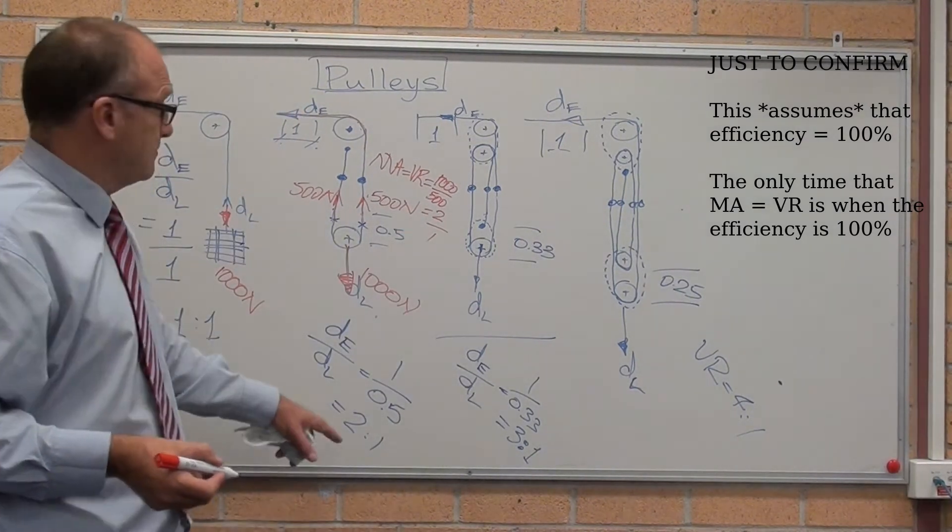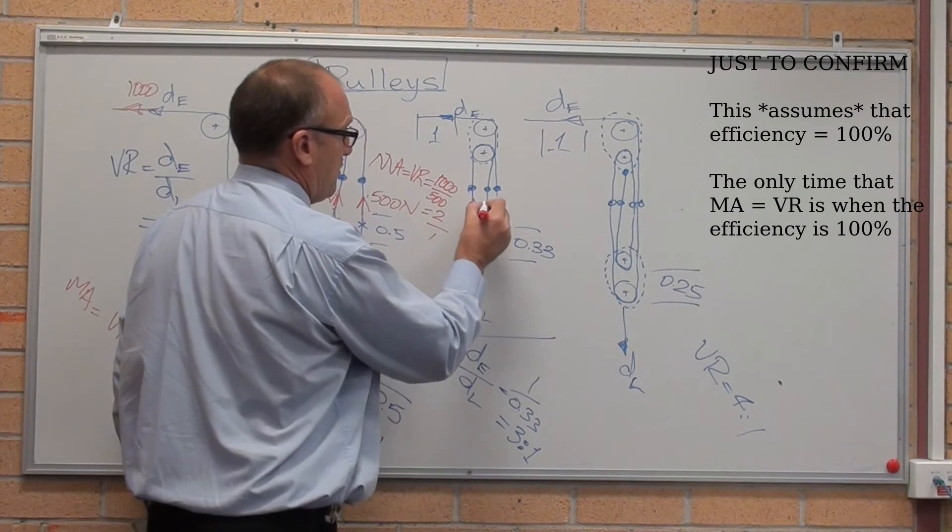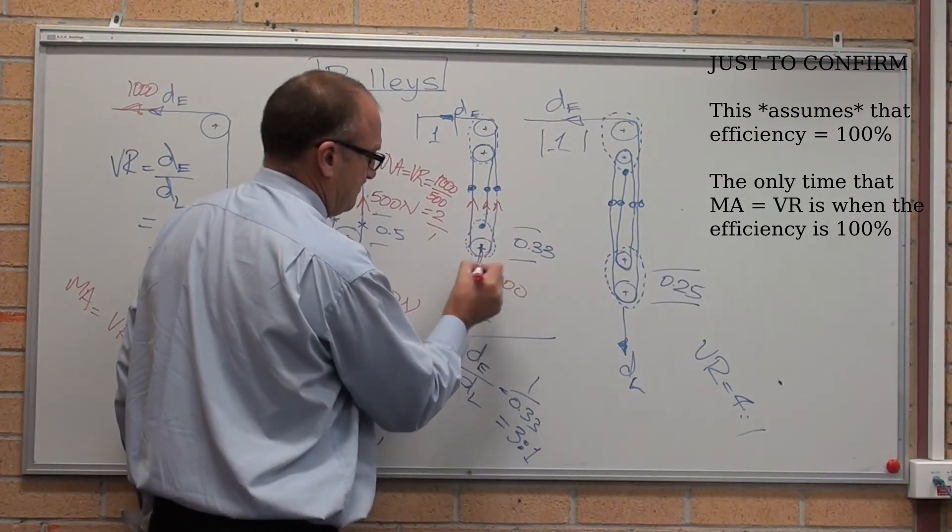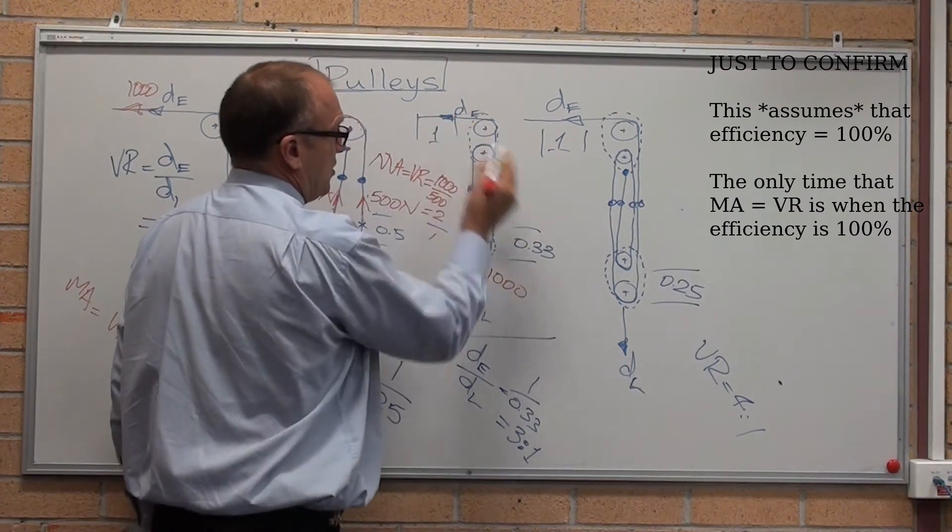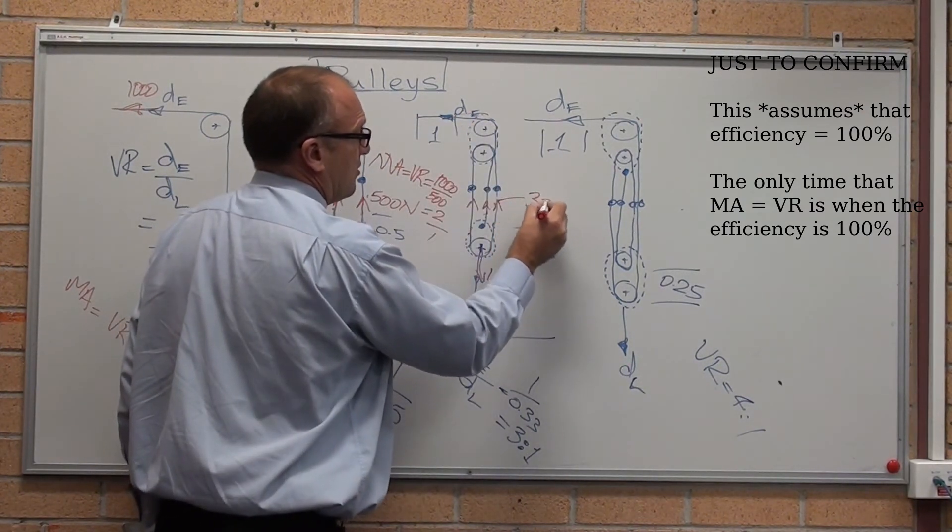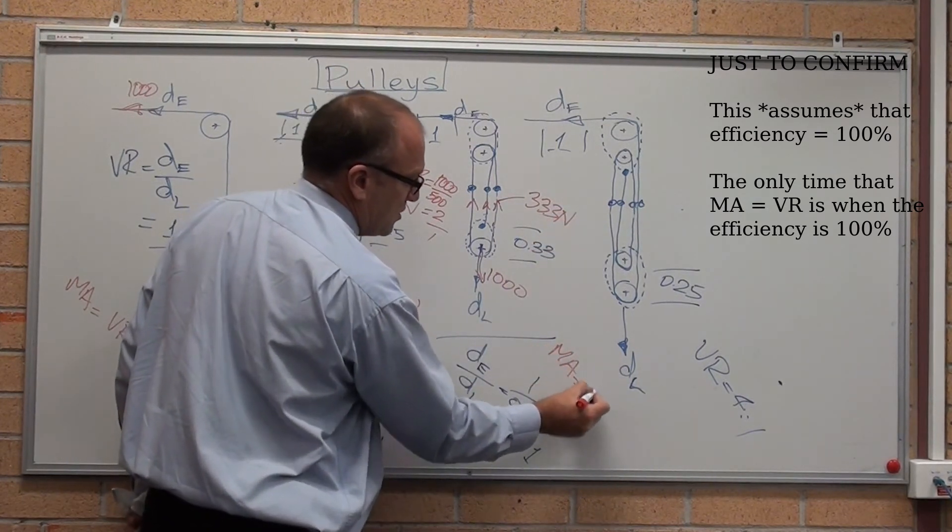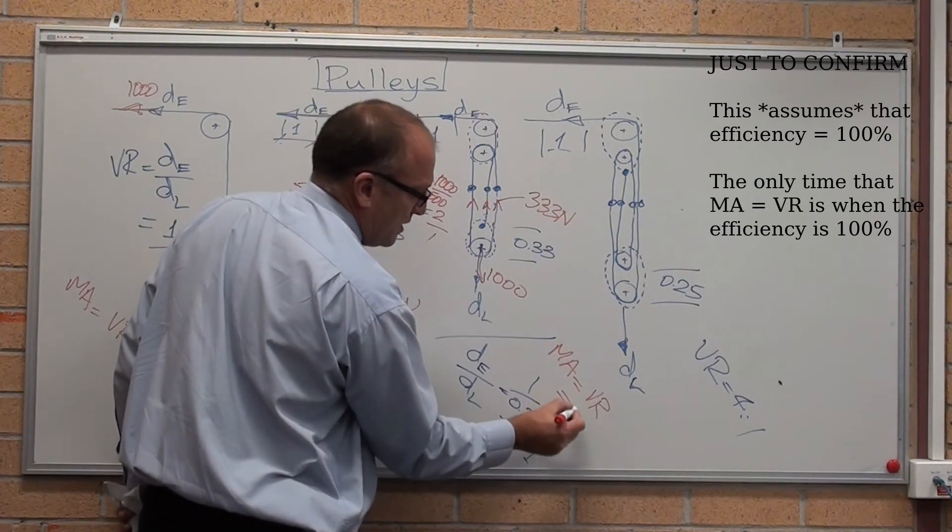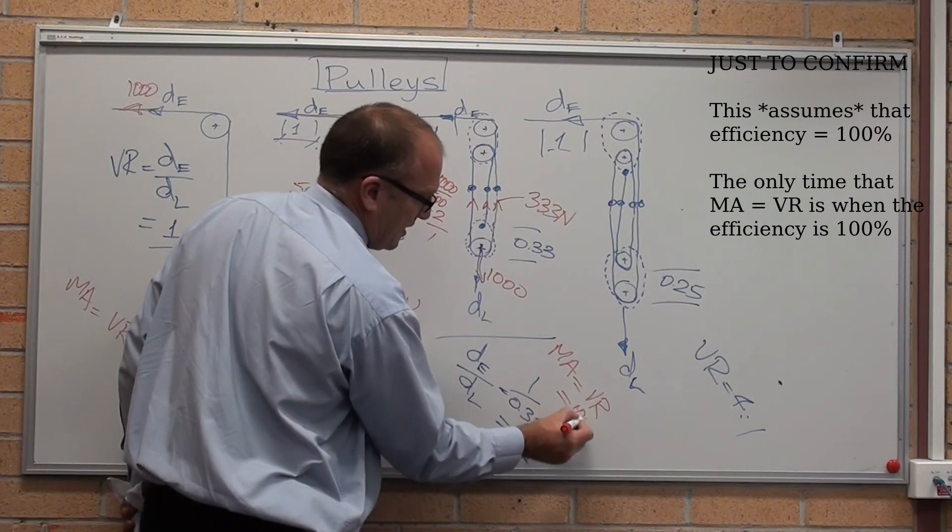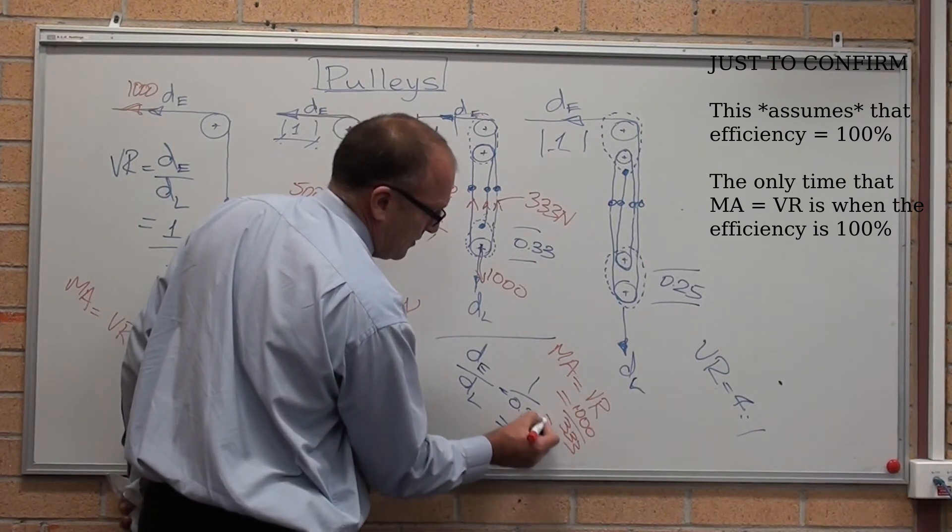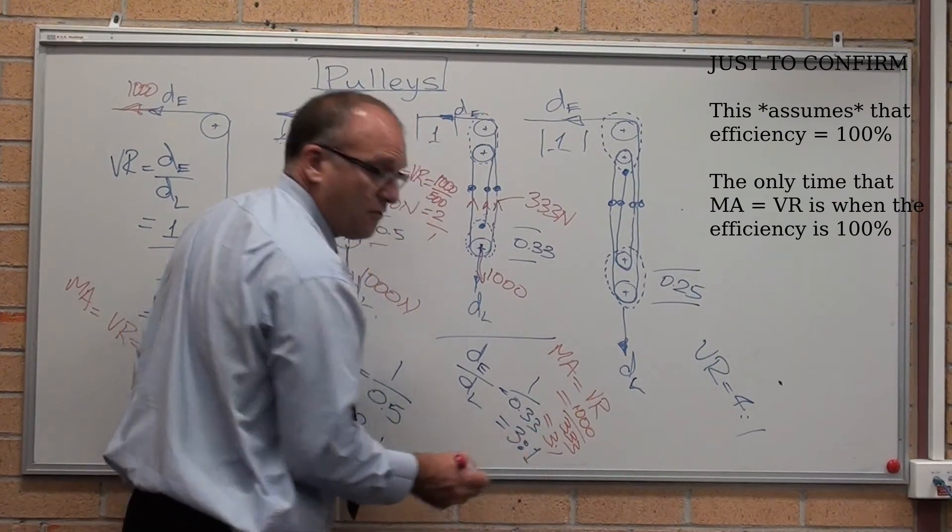Same thing here. Three ropes. The tension, if that's 1,000, tension in this rope that you're holding on to is 333 newtons. Mechanical advantage equals velocity ratio equals 1,000 load on effort. Three to one.